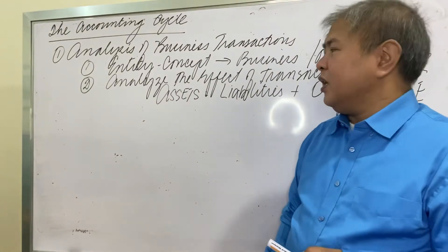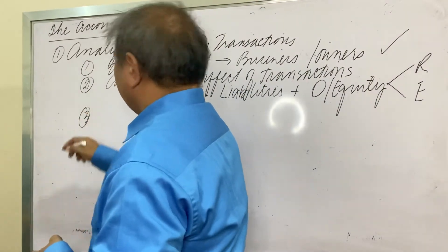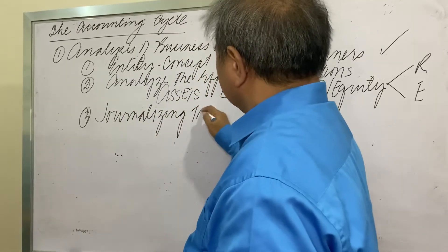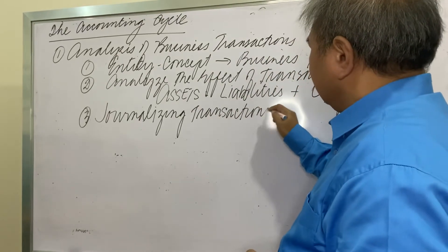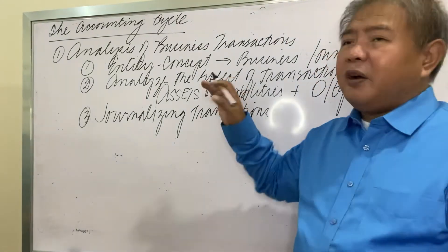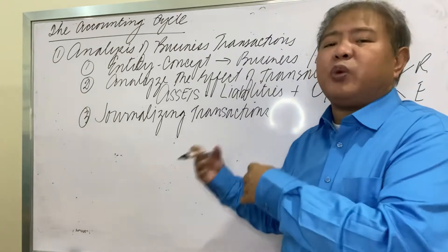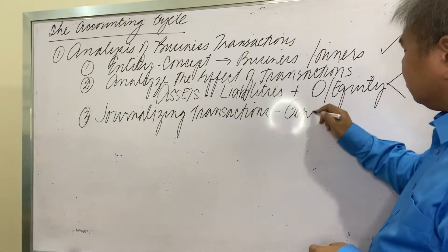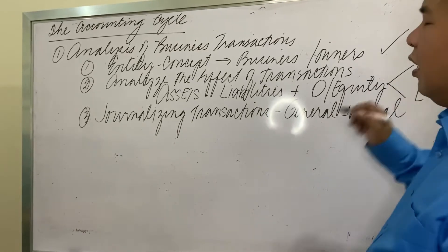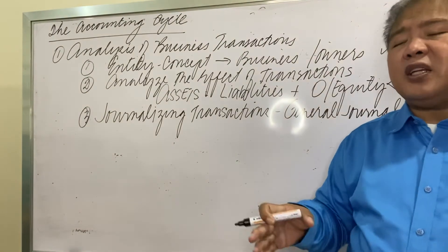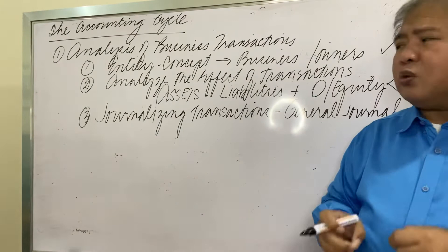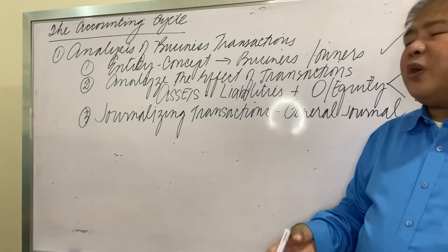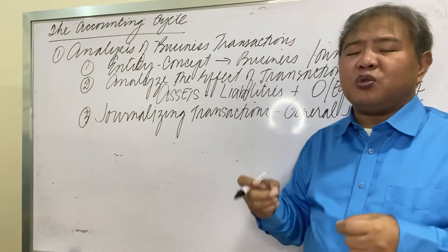The third step is journalizing, or recording the transaction. After analyzing the effects on assets, liabilities, equity, revenues, and expenses, you are now ready to record the transactions in what we call the general journal. The general journal is the book of original entry — the first record used in accounting.